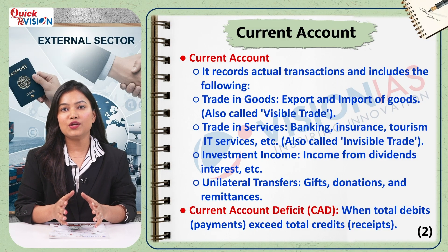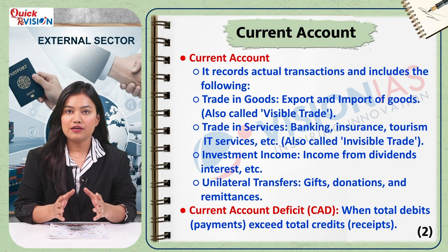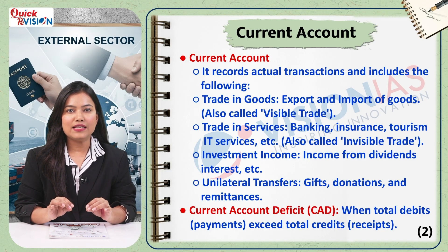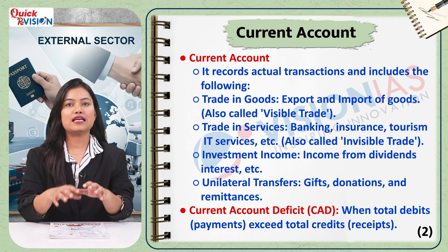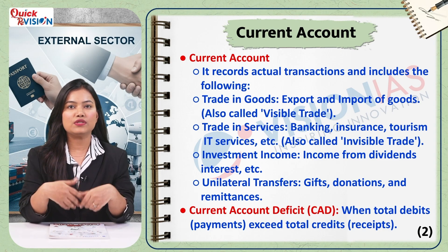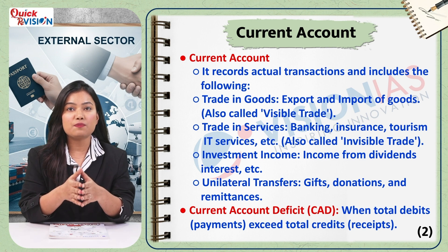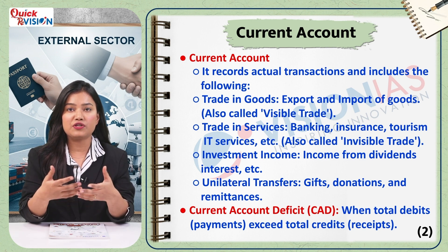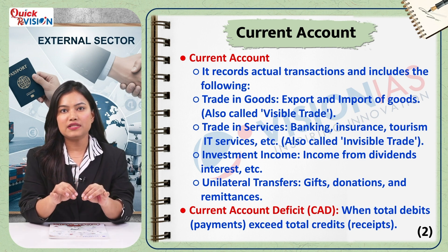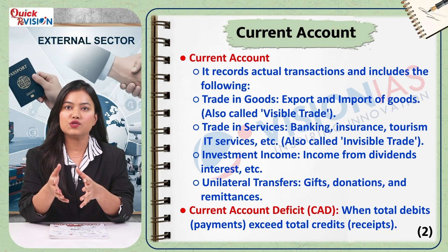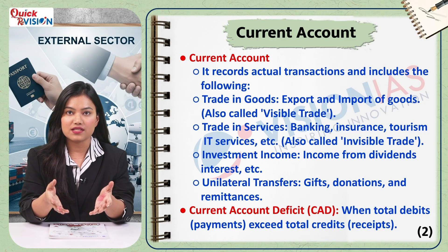The current account has four main components. The first is trade in goods — the import and export of physical items — the balance of which is called the balance of trade. The second is trade in services, which includes services like IT and tourism. The third is investment income, such as profits or interest earned from investments made abroad. And the fourth is unilateral transfers, which includes gifts or remittances sent by Indians working abroad.